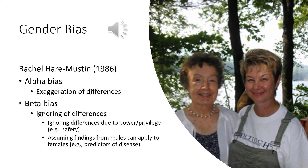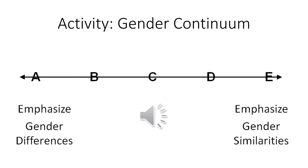Rachel Hare-Mustin, a psychologist, developed the famous concept of alpha bias and beta bias, which has been used to describe gender and also sexual orientation and race and ethnicity. She adapted these terms from errors in hypothesis testing — alpha error and beta error. Alpha error is the probability that you will say there's a difference between two populations that doesn't actually exist. Beta error is the likelihood that you'll show no difference when one actually does exist. Applied to gender, alpha bias is exaggerating differences between males and females that don't exist, and beta bias is making them sound more similar than they are — perhaps ignoring differences in power and privilege. Our goal is to try to stay in the middle and avoid either extreme.